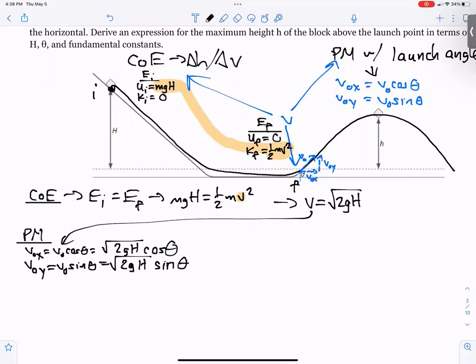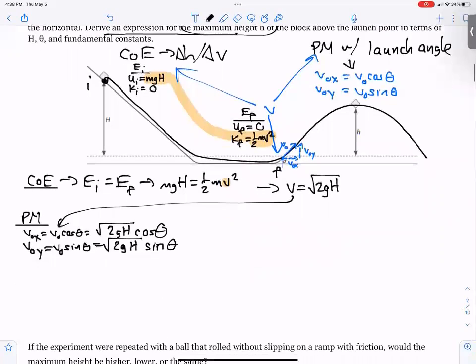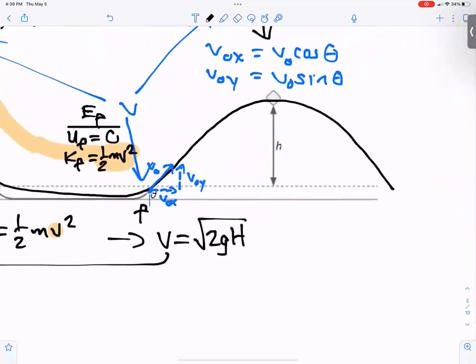In order to find an expression for the maximum height, there's two equations on the AP exam that deal with finding essentially y, the vertical height. One would be y equals y naught plus v naught y t minus one half g t squared. Well, that's going to be problematic because we don't have an expression yet for the time it takes to get to the highest point.